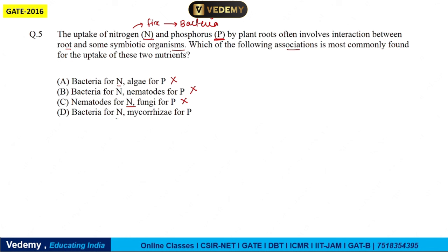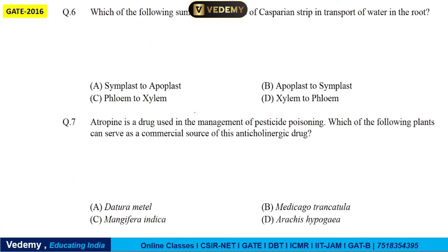The next question asks which of the following summarizes the role of the Casparian strip in transport of water in the root. The first option — symplast to apoplast — is wrong. The next option — apoplast to symplast — is right. That is the answer, as seen in the endodermis at the Casparian strip. The answer is B.